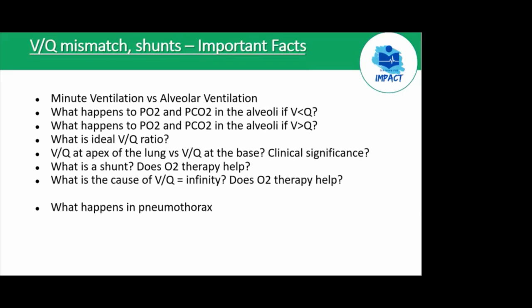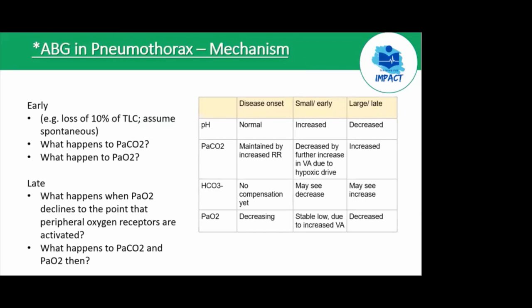This is clinically relevant because certain bugs thrive in lower or higher oxygen environments. For example, tuberculosis thrives in high-oxygen environments — high ventilatory areas within the lung, i.e., the apex. So if you see apical consolidation on a chest X-ray alongside infective signs, think TB. This slide describes similar concepts in the context of a pneumothorax.